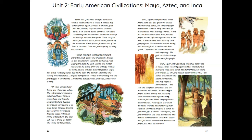The wooden people seemed fine at first. They looked like humans and talked like humans, and they began to have children. Their sons and daughters spread out into the mountains and valleys. But these rigid people did not develop well physically — their wooden bodies began to warp. Without flesh and blood, the people were uncoordinated. Worst of all, they could not think. Without any memory of their creation, they made no effort to honor the gods with gifts of thanks. What good, the gods wondered, are these non-thinkers who wander aimlessly about the earth? Tepew and Cucumatz decided that these wooden people, too, must be destroyed.